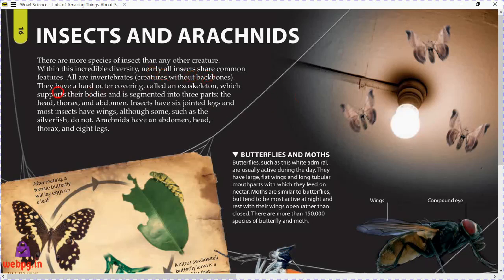Nearly all insects share common features. All are invertebrates — creatures without backbones. They have a hard outer covering called an exoskeleton, which supports their bodies, and their bodies are segmented into three parts: the head, thorax, and abdomen.